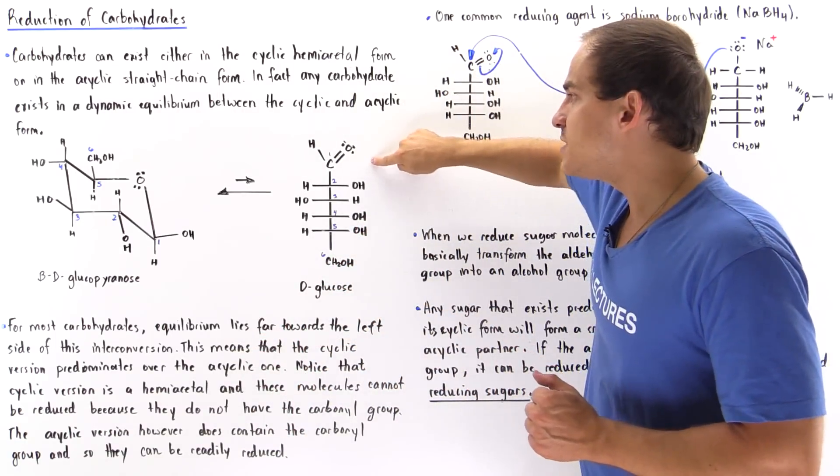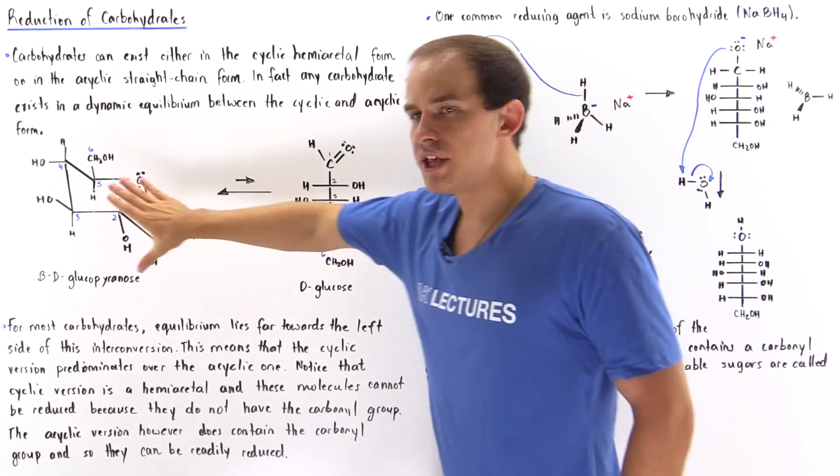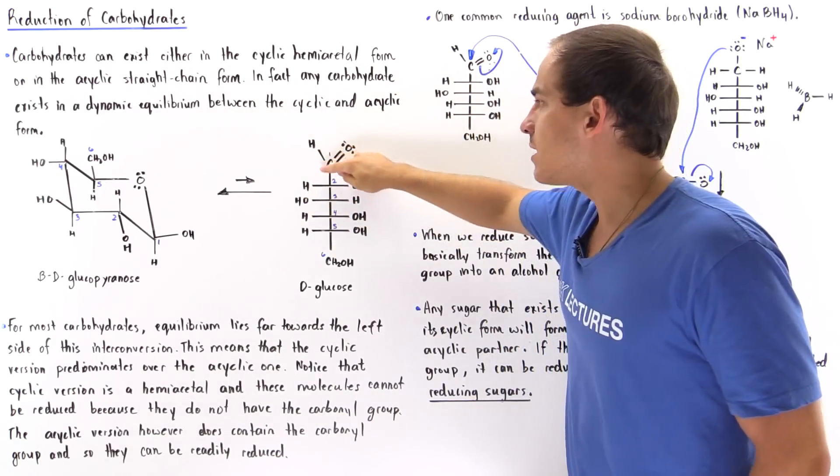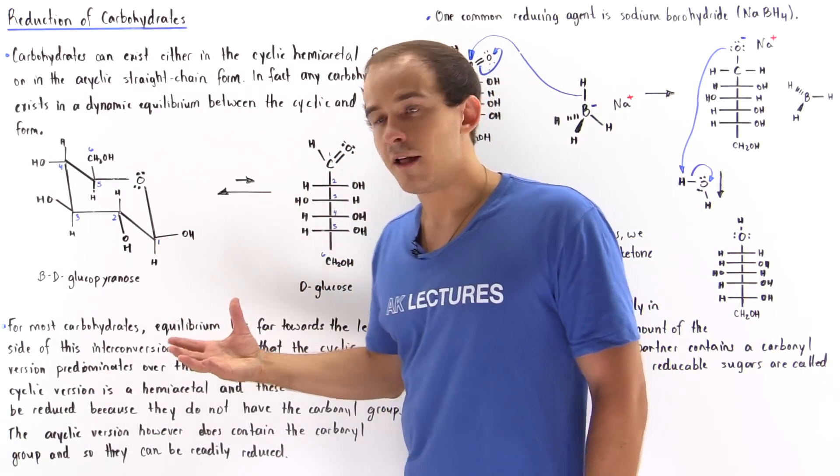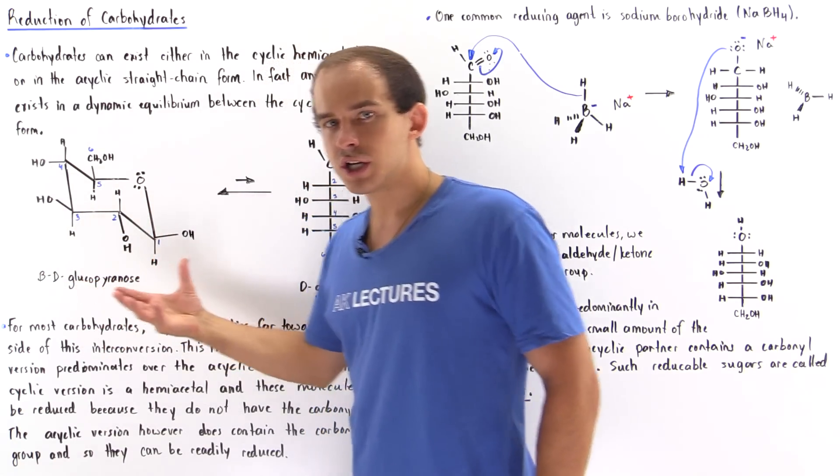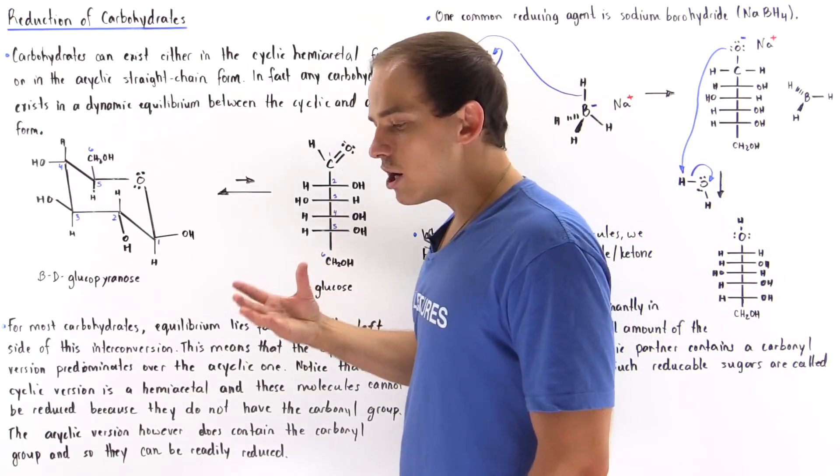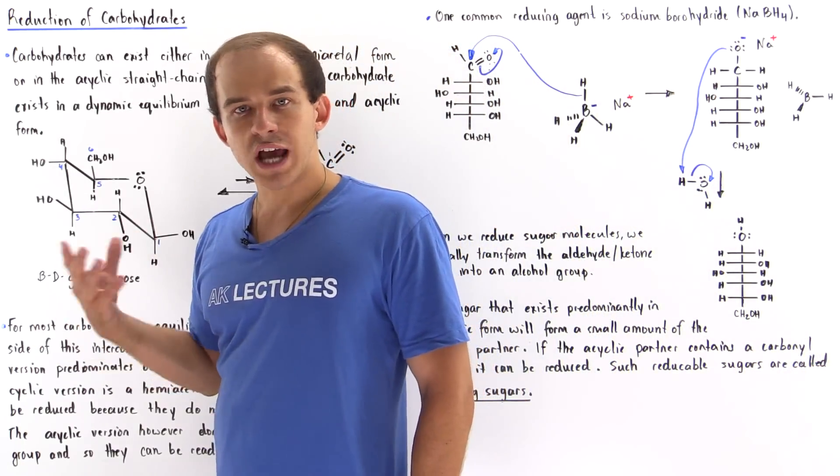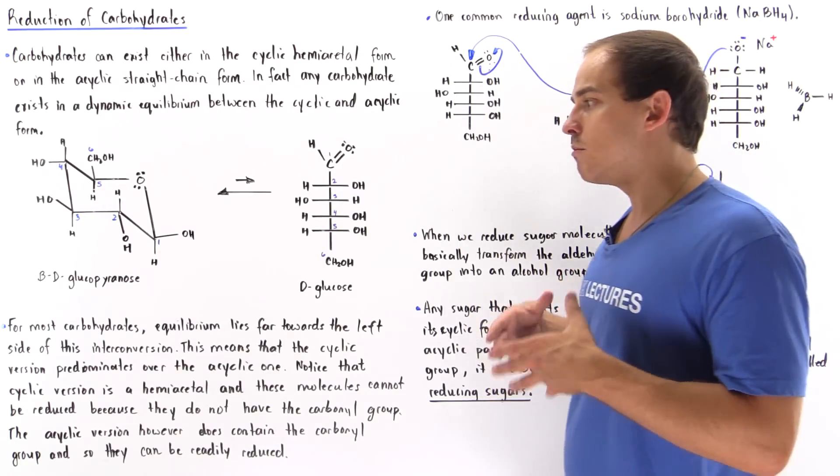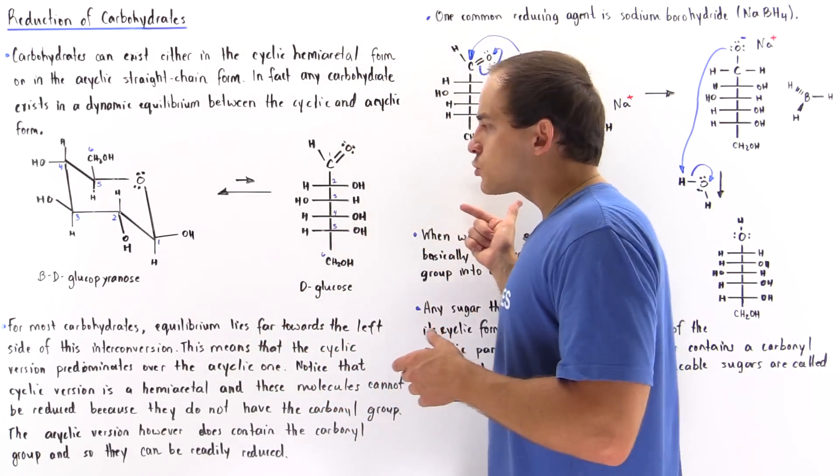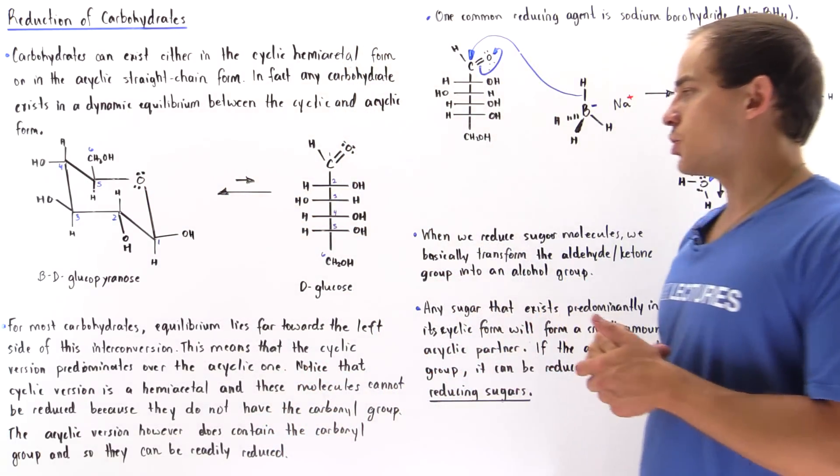That's because on this molecule, we have the carbon-oxygen double bond, while in this case, this carbon-oxygen double bond is basically transformed into a hemiacetal. So this is the hemiacetal version of this molecule here. Recall that hemiacetals do not undergo reduction reaction. So basically, if we want to protect our sugar molecule from undergoing a reduction reaction, we transform it into this cyclic hemiacetal version.